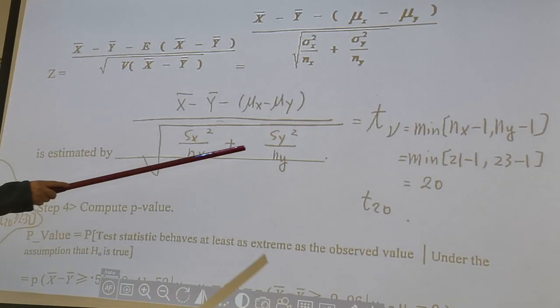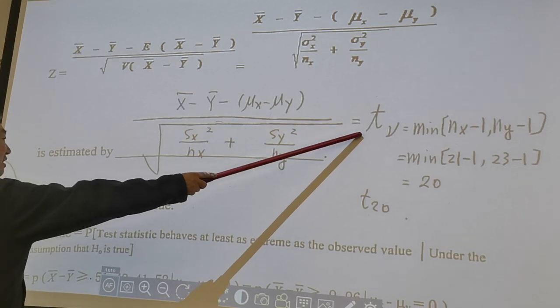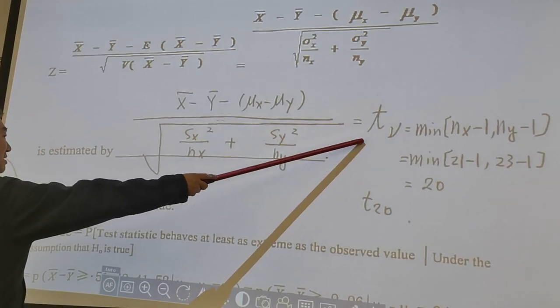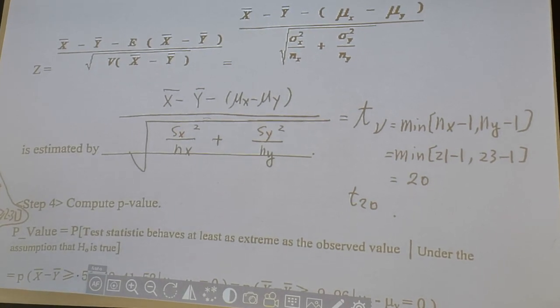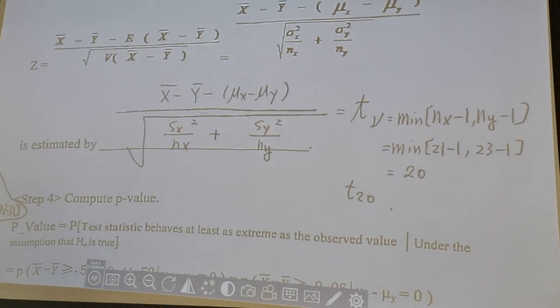it's no longer standard normal. It is Student t distribution. But not exactly, just approximate. Remember we have two different approximation of degree of freedom.